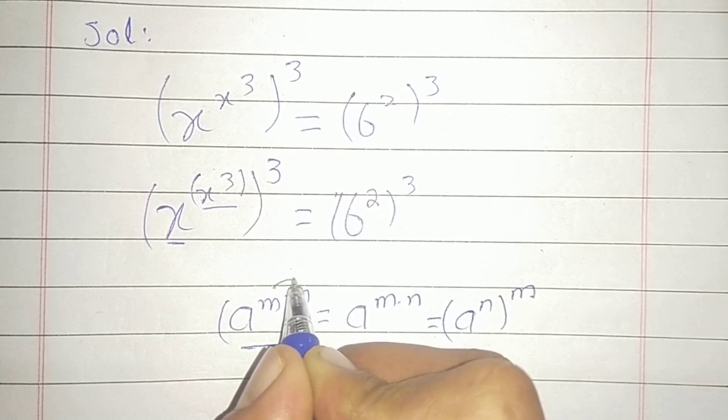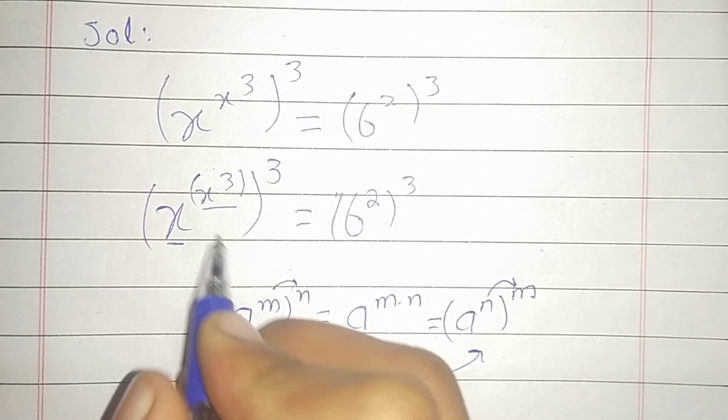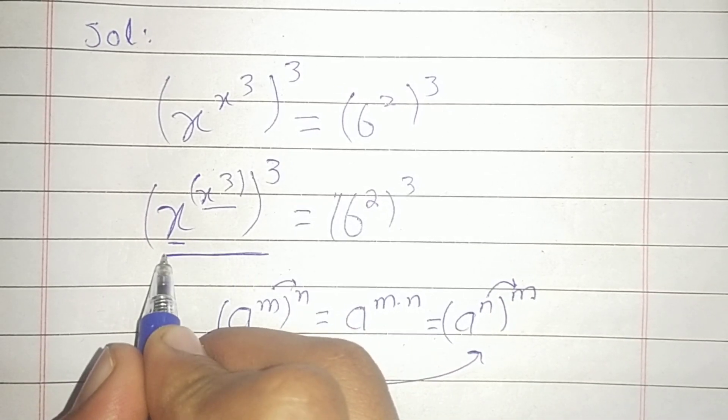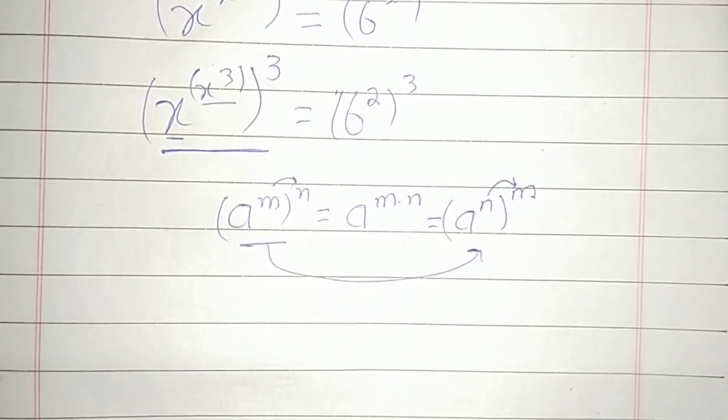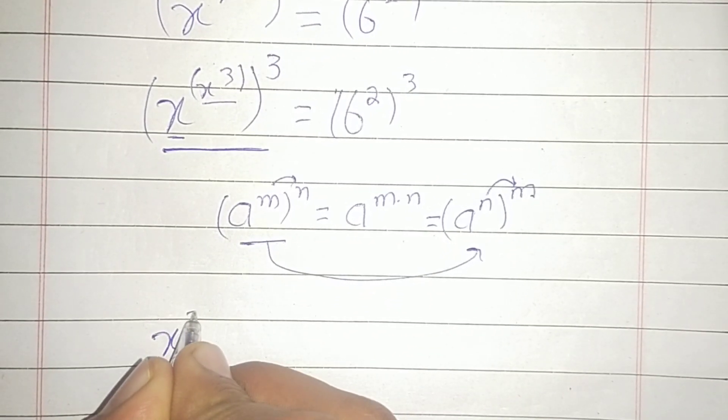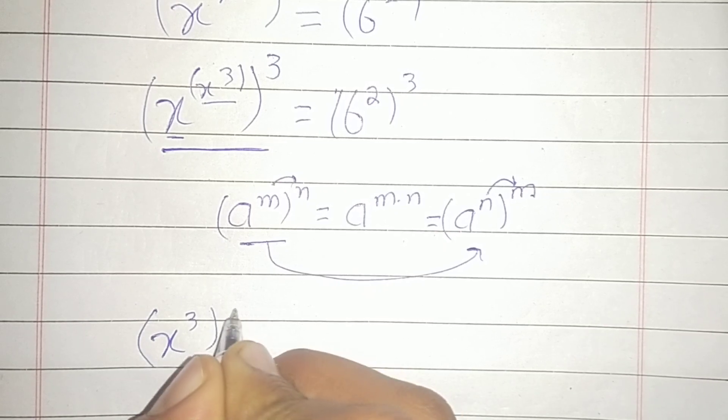So applying this identity on this side, this becomes (x^3)^(x^3).